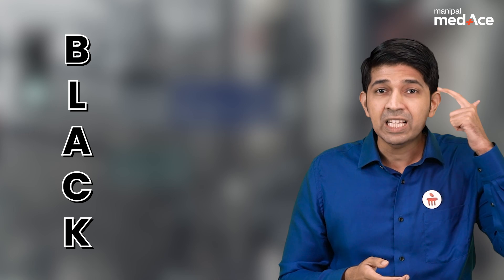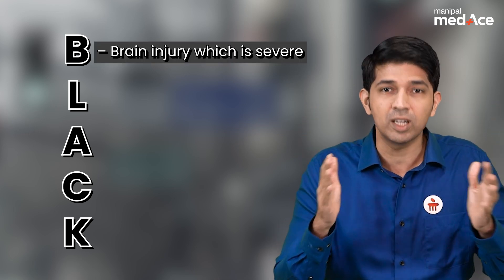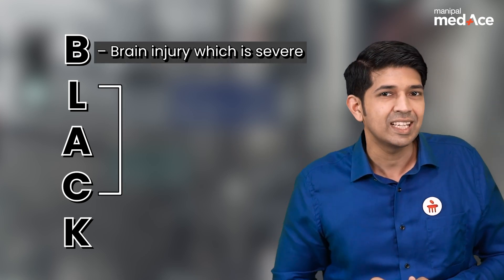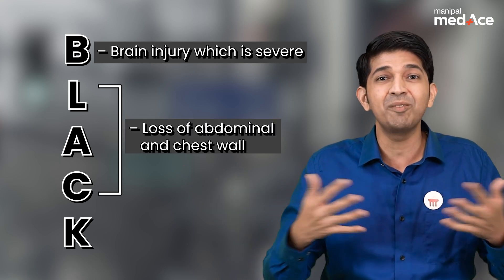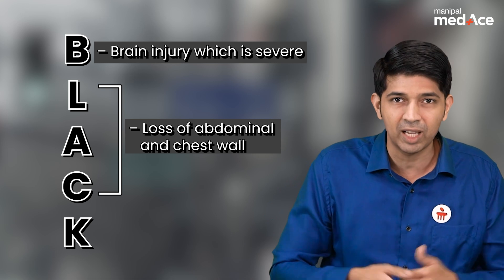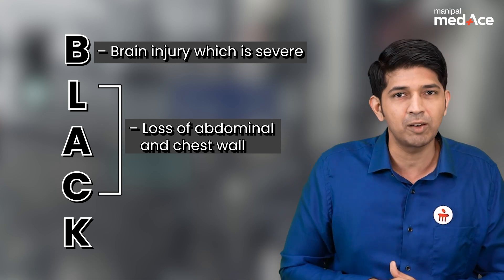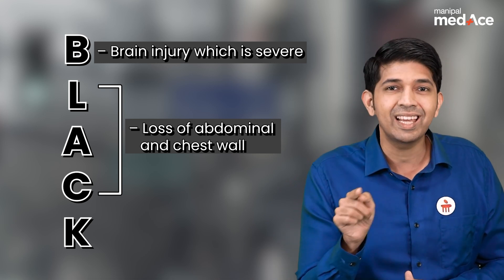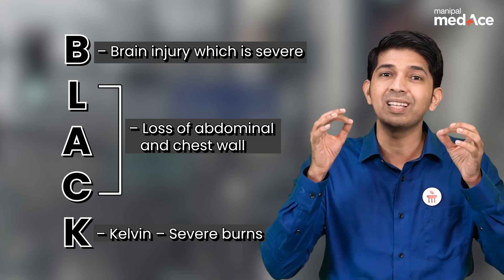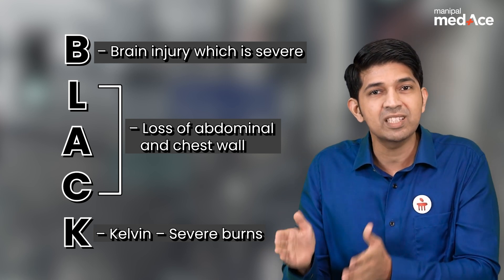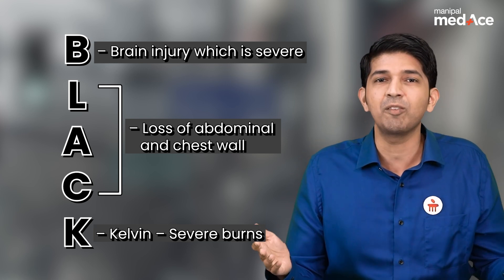Finally, we have the black category — these are moribund or unsalvageable patients. Remember the mnemonic BLACK: B is for severe brain injury, L is for loss of abdomen and chest wall, meaning evisceration of organs. These patients are unsalvageable. K stands for Kelvin, a unit of heat — so severe burns involving the entire body. Again, these patients are categorized as black and are unsalvageable.